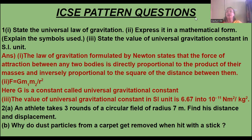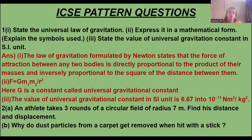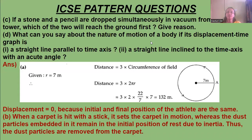The next question is: an athlete takes three rounds of a circular field of radius seven meters — find his distance and displacement. Another question is: why do dust particles from a carpet get removed? The third question is: if a stone and a pencil are dropped simultaneously in vacuum from the top of a tower, which one will reach the ground first and why? And what can you say about the nature of motion if the displacement-time graph is a straight line parallel to the time axis or a straight line inclined to the time axis?